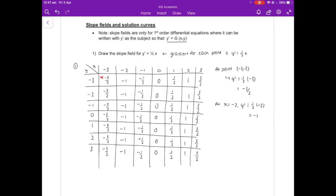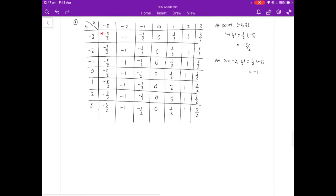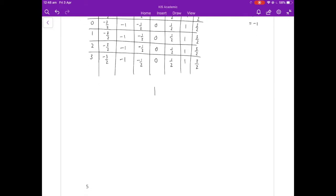Okay, so there we have all the different gradients for these points. Obviously there are going to be a lot more points on each of these curves, but this is just a rough estimate of what it should look like. Then I'm going to start drawing out the slope field. So we have our two axes. 0, 1, 2, 3.